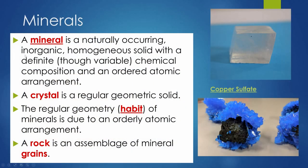A mineral has a very specific definition: it's naturally occurring, inorganic — so not made by life, meaning shells are not minerals — homogenous, which means kind of the same all the way through, with a definite chemical composition. Quartz, for example, is silicon dioxide: one silicon, two oxygen. That's a definite chemical composition. And it has an ordered atomic arrangement.